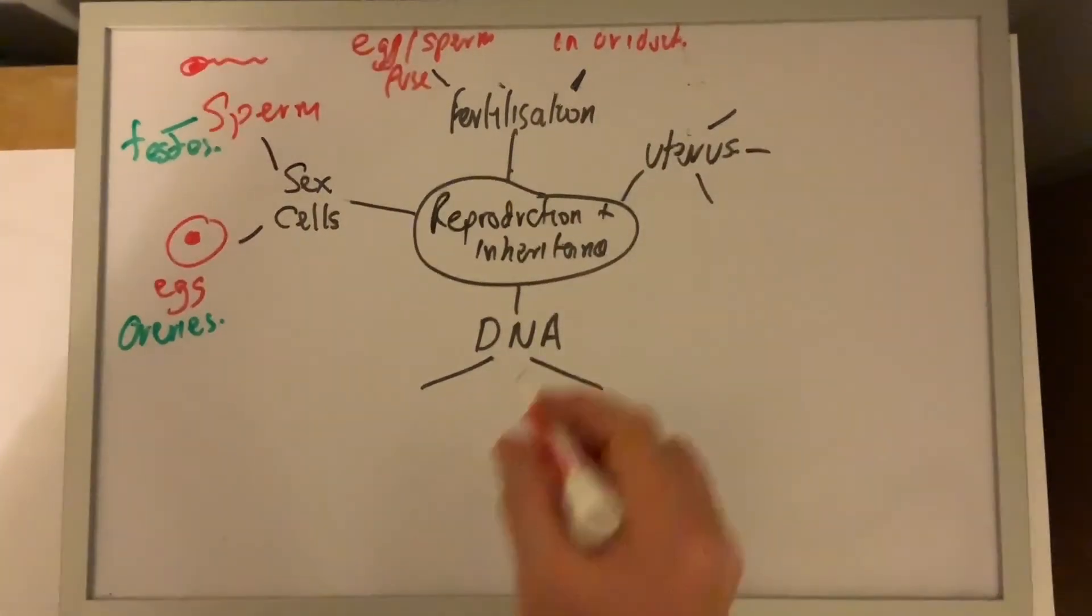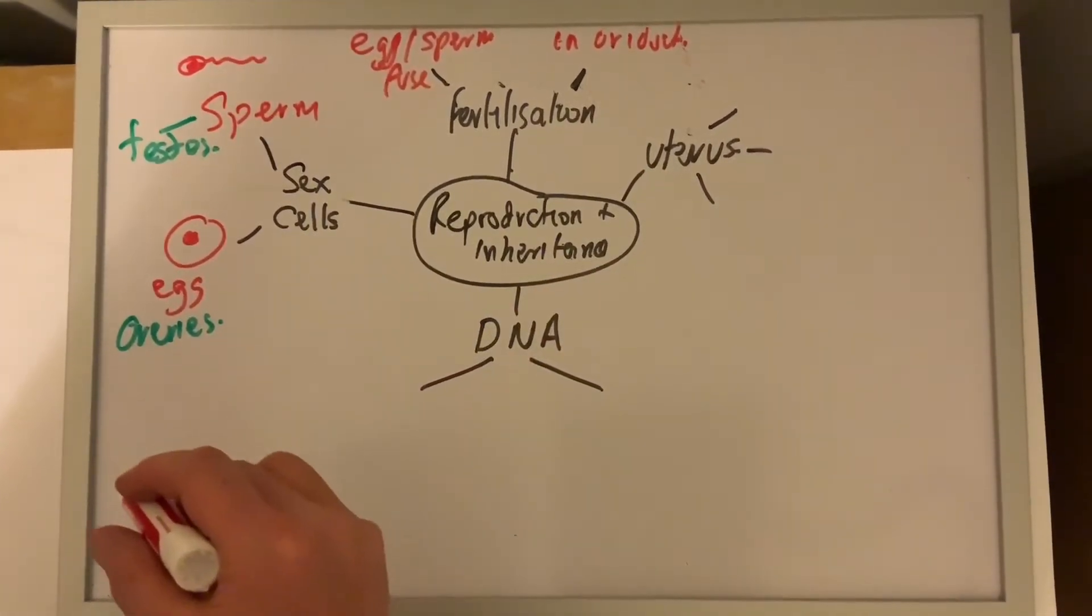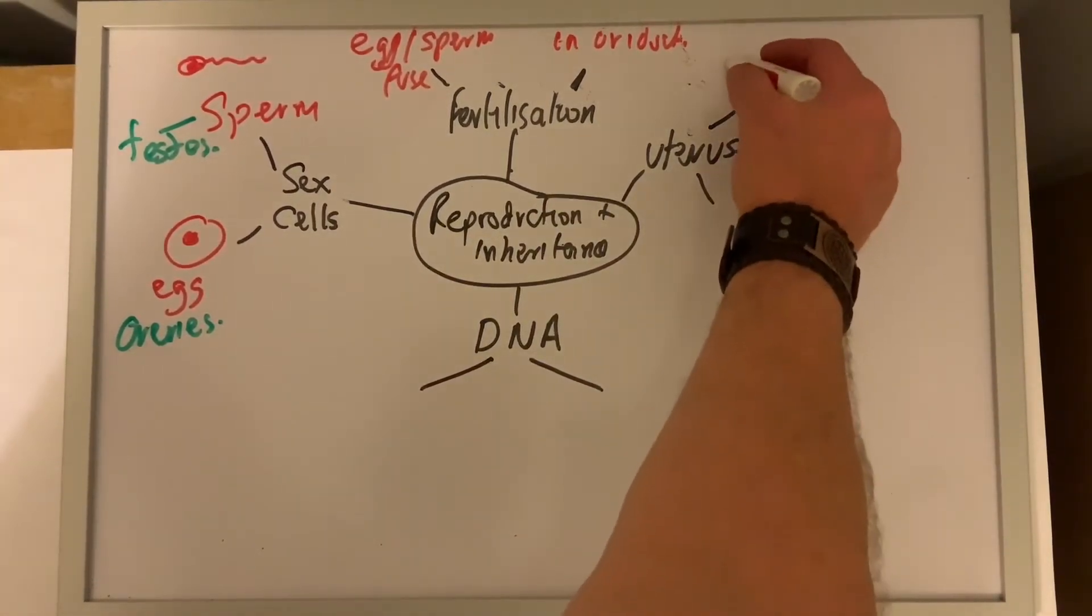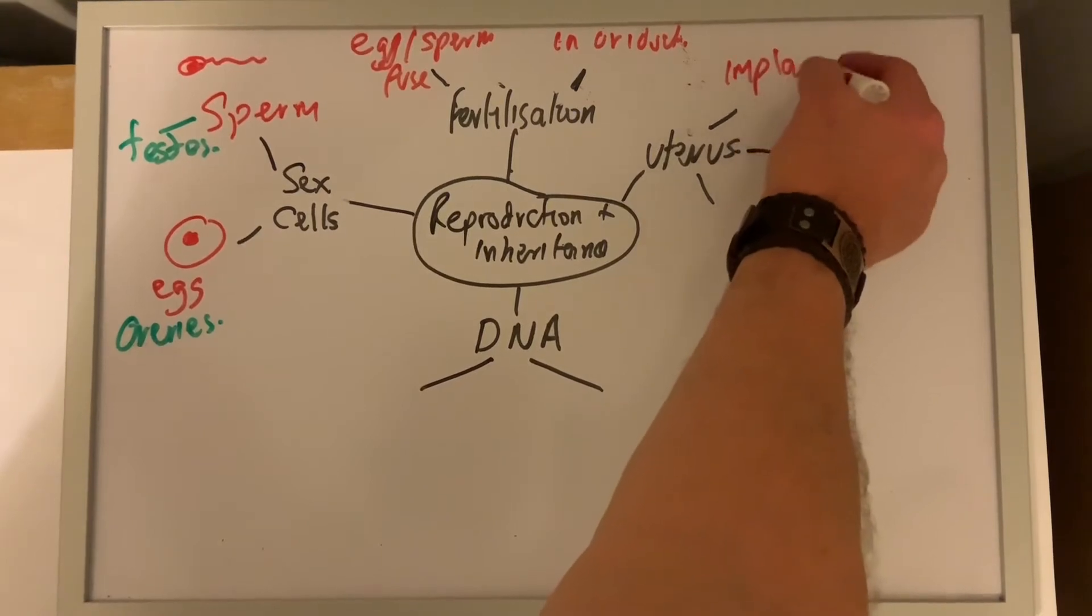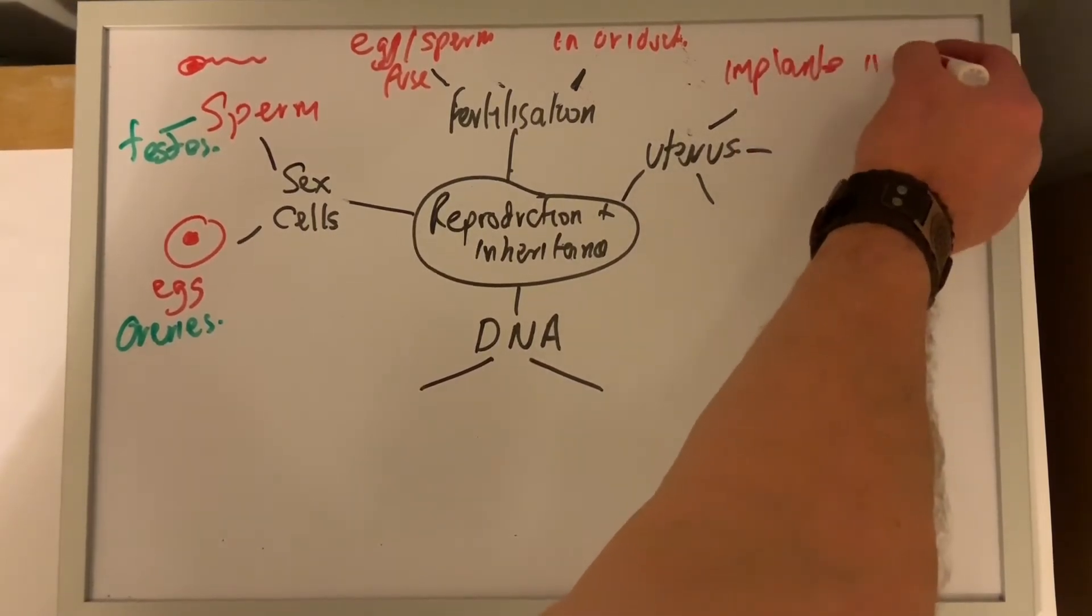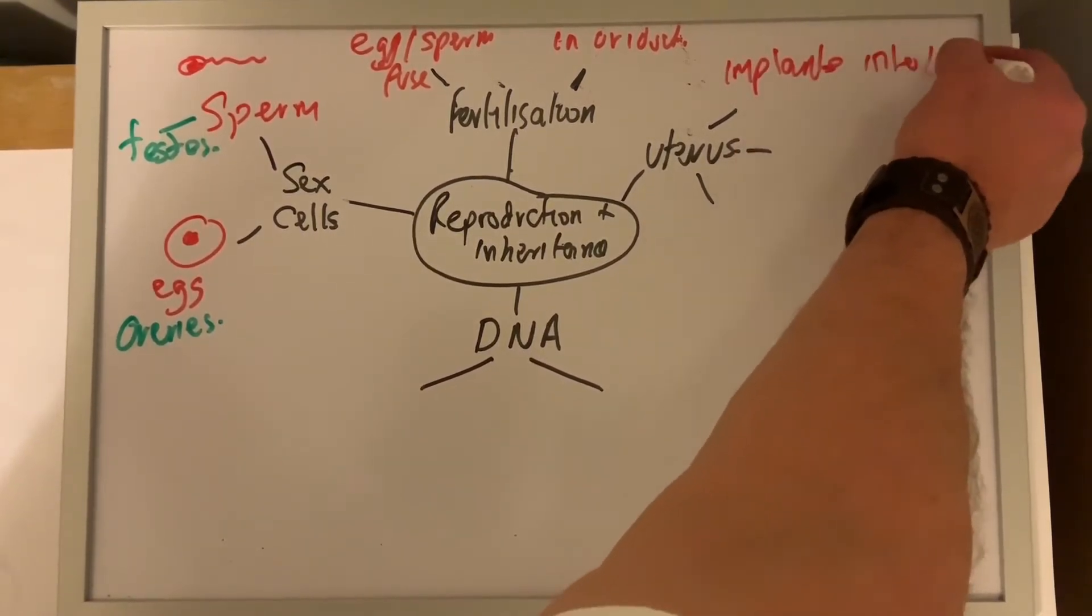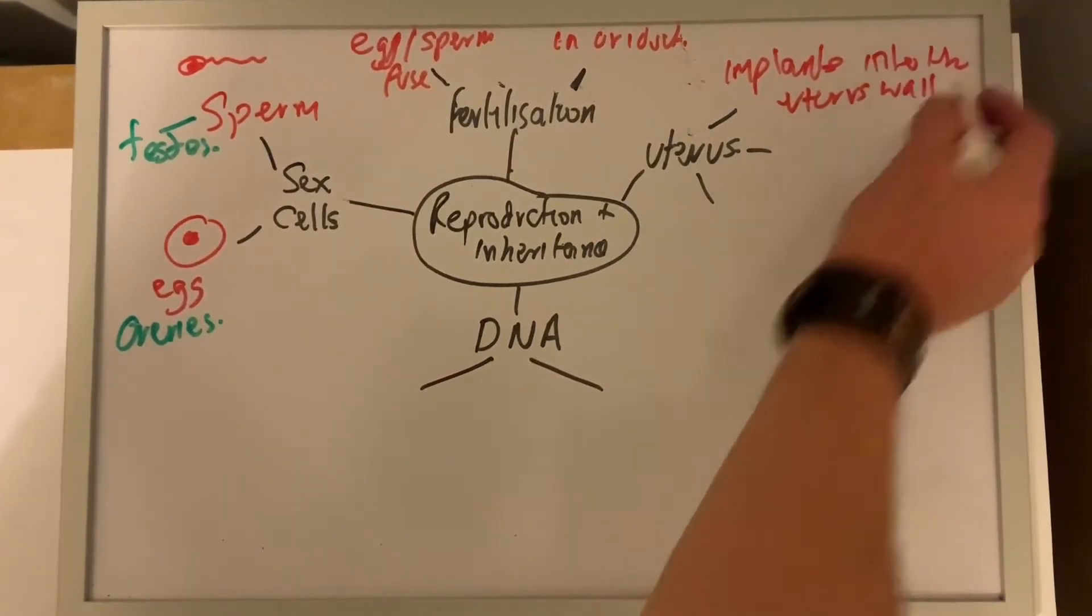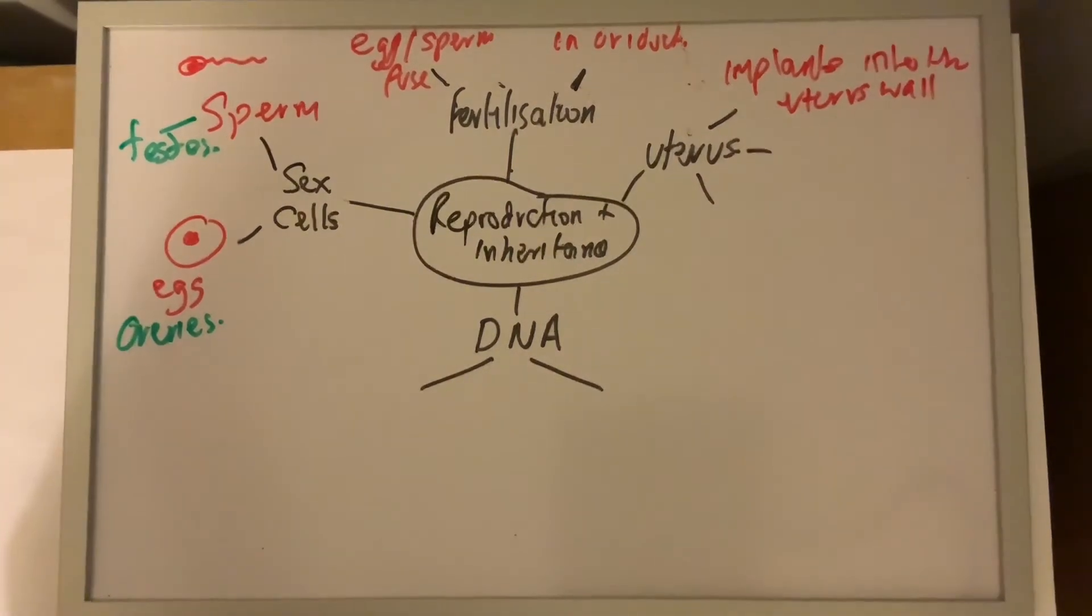The fertilized egg, now called a zygote, travels along the oviduct until it gets into the uterus, where it implants into the uterus wall. And that's where it's going to stay for the next nine months.